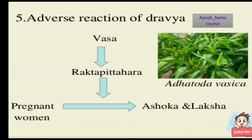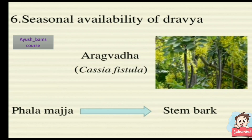Instead, drugs like Laksha and Ashoka are used in pregnant women for the same purpose. Sixth is seasonal availability of dravyas — in some seasons only certain dravyas will be available, and during non-availability we can substitute another. For example, in place of Aragvada we can use its Phalamajja — the stem or bark — for this purpose.